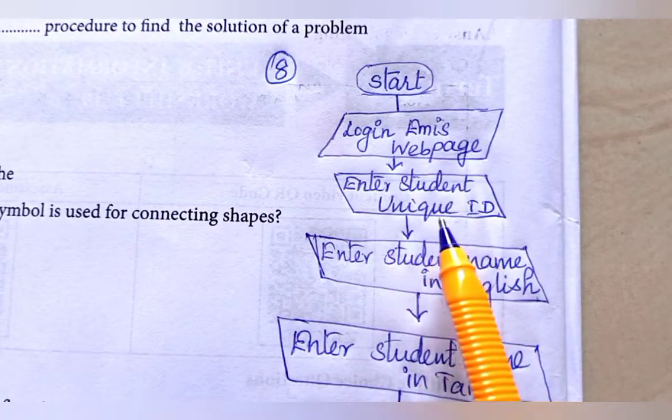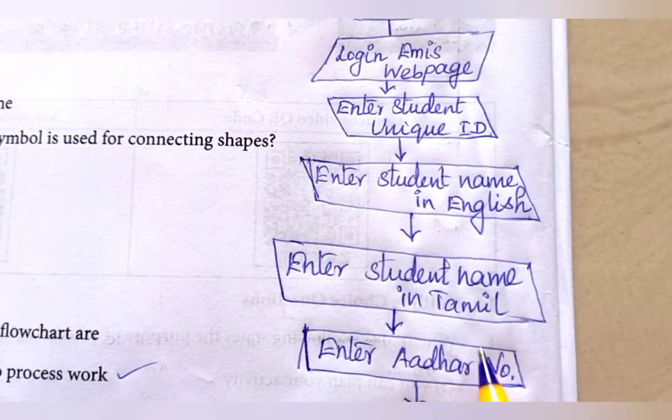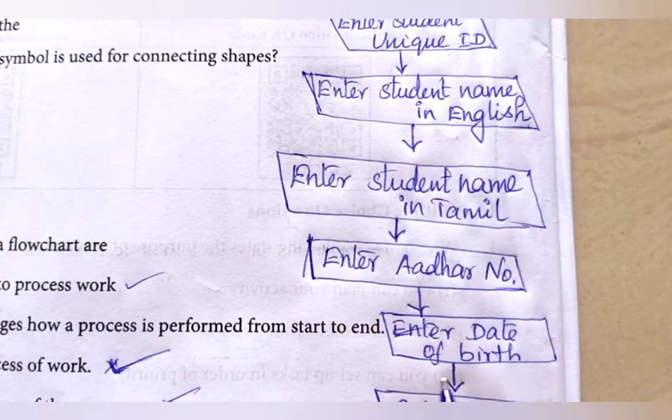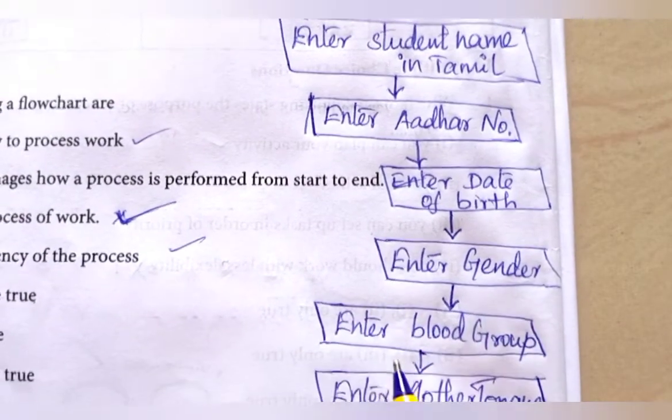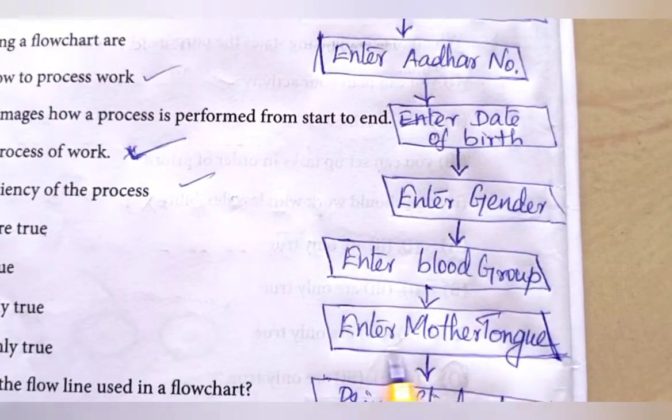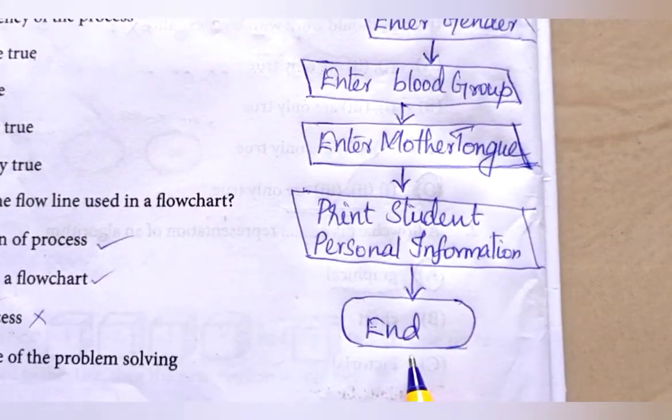Enter student unique ID. Enter student name in English. Enter student name in Tamil. Enter Aadhar number. Enter date of birth. Enter gender. Enter blood group. Enter mother tongue. Enter bank. Print personal information. End.